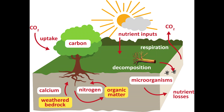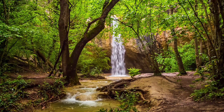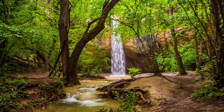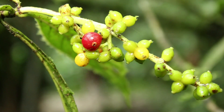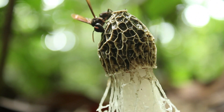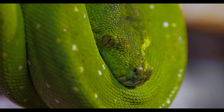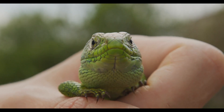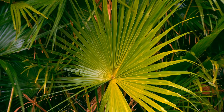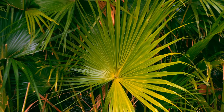The nutrient cycle works at a very fast rate in the rainforest due to the heat and humidity, so nutrients are taken up by plants very quickly. Tropical rainforests have the highest level of biodiversity compared to all other ecosystems in the world. No one knows exactly how many species there are, but estimates range between 3 and 50 million species.